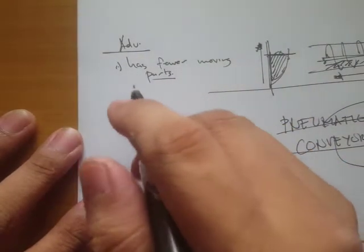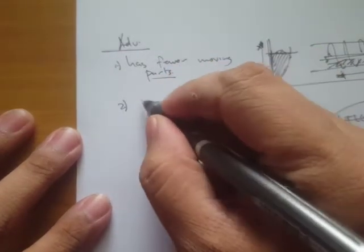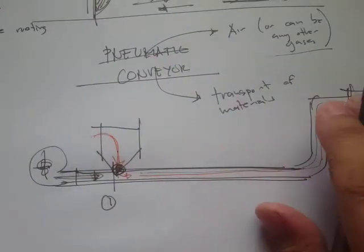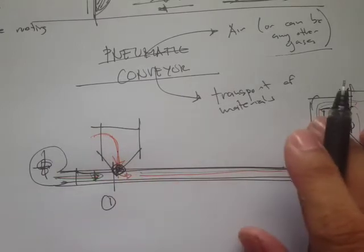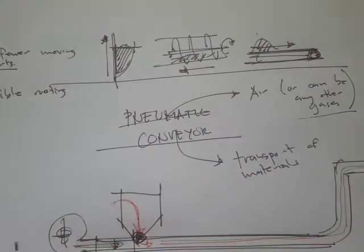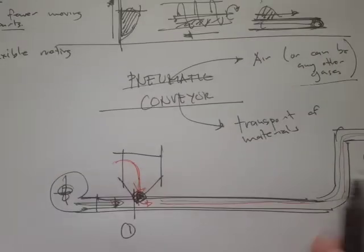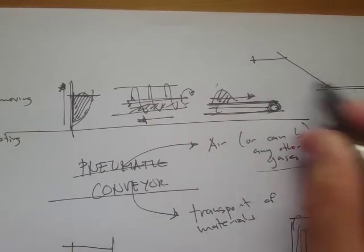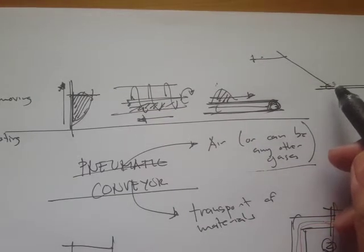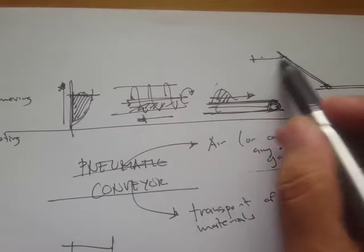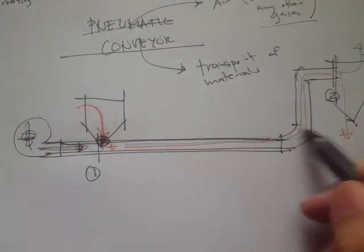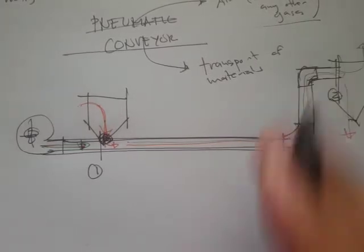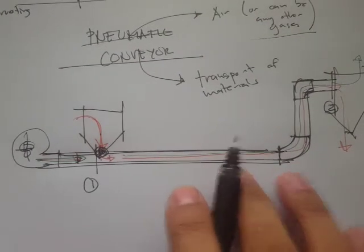The second advantage is flexible routing. You can have flexible conduits and whatever routing may be impossible for the other three conveyors, but for pneumatic conveyors it is possible. For example, a belt conveyor would need complex mechanical connections for unusual routing, but for pneumatic systems it's just pipes — you can have 90-degree bends, 45-degree bends, or whatever. It has more flexible routing capacity.